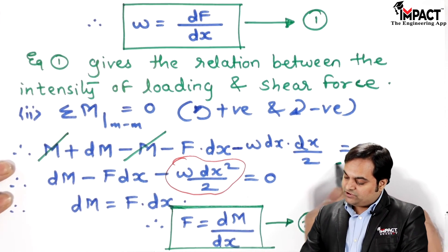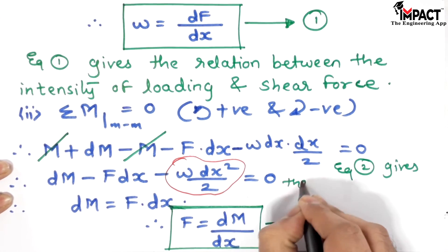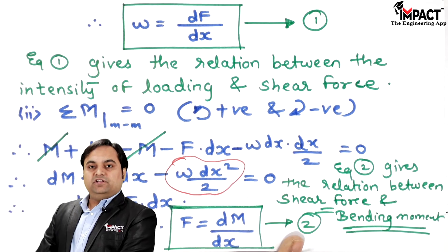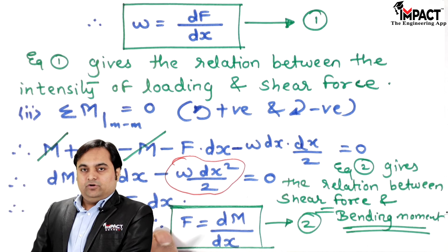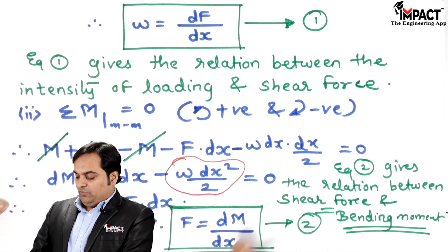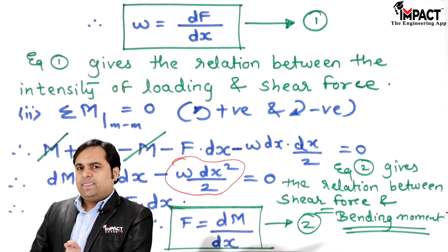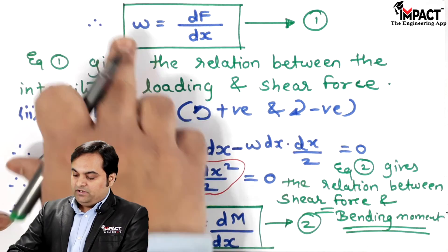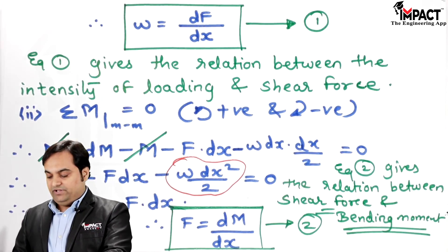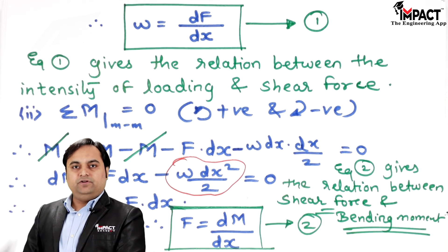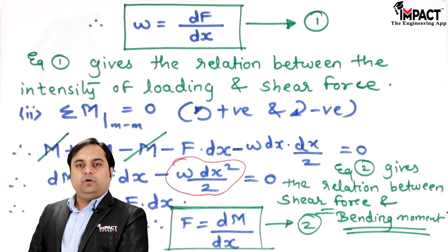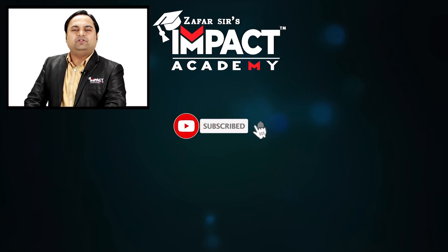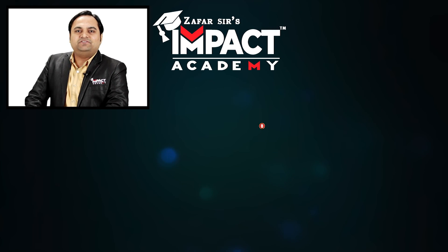Equation 2 gives the relation between shear force and bending moment: F = dM/DX, where F is the shear force at the section and dM is the change in bending moment over the elemental distance DX. In summary, we have derived two key equations: Equation 1 relates the intensity of loading w to the shear force (dF/DX = w), and Equation 2 relates shear force to bending moment (F = dM/DX). These relations will be used when solving problems for shear force diagrams and bending moment diagrams. If you find the video helpful, please like, share, comment, and subscribe.